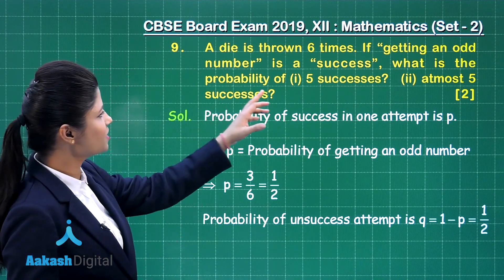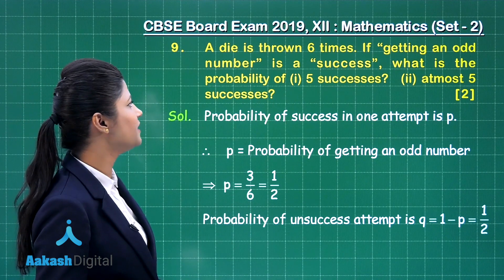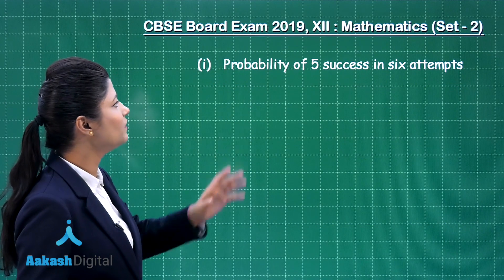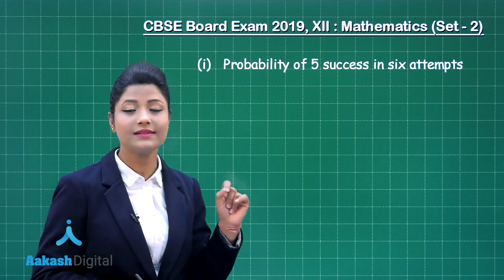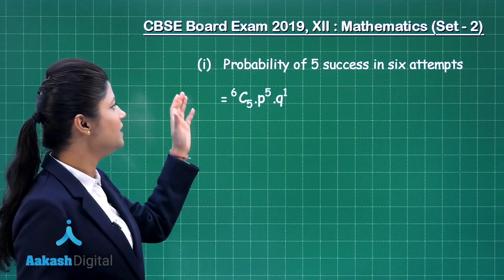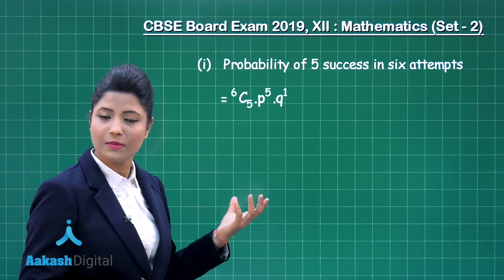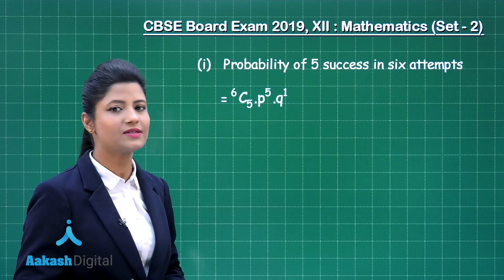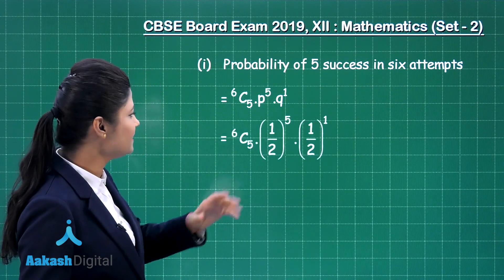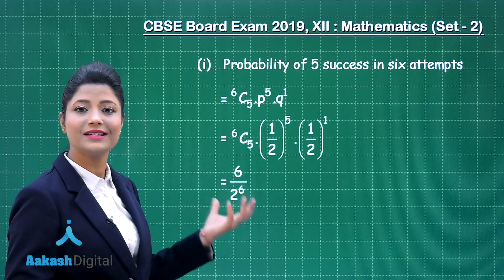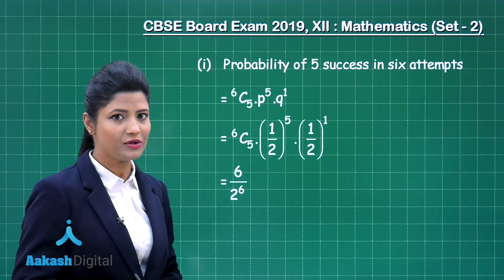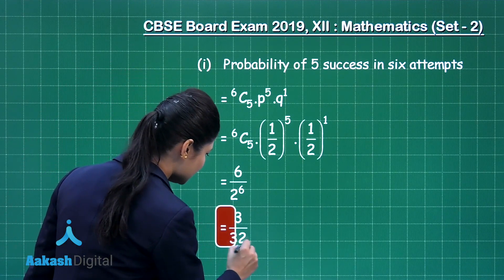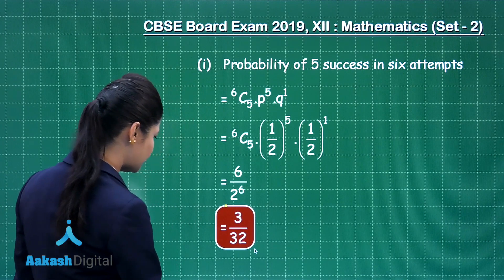For the first part, the probability of getting 5 successes in 6 attempts is: C(6,5) * p^5 * q^1. Substituting p = 1/2 and q = 1/2, this gives 6 / 2^6 = 6/64, which reduces to 3/32. This is the required answer for the first part.